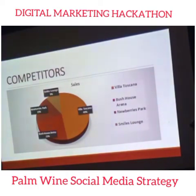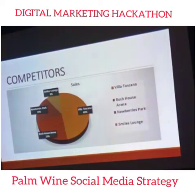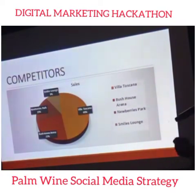The direct competitors facing Zion Event Center AMBA are Villa Toscana, Good House Arena, New Berets Park, and Smile Lodge. These competitors are very well positioned on social media and have a stable customer base. As shown on the chart, Villa Toscana controls approximately 49% of the customer base, Bush House Arena 23%, New Berets Park 19%, and Smile Lounge controls 9%.